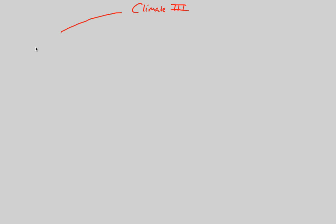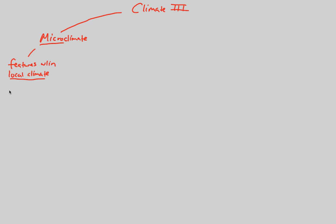We've covered macroclimate over the past two videos, and now we want to add some detail to what microclimate is all about. Microclimate refers to small-scale climate — more specifically, it includes features within local climate, as opposed to that broad climate we observed in macro. Features within local climate can influence climate conditions.